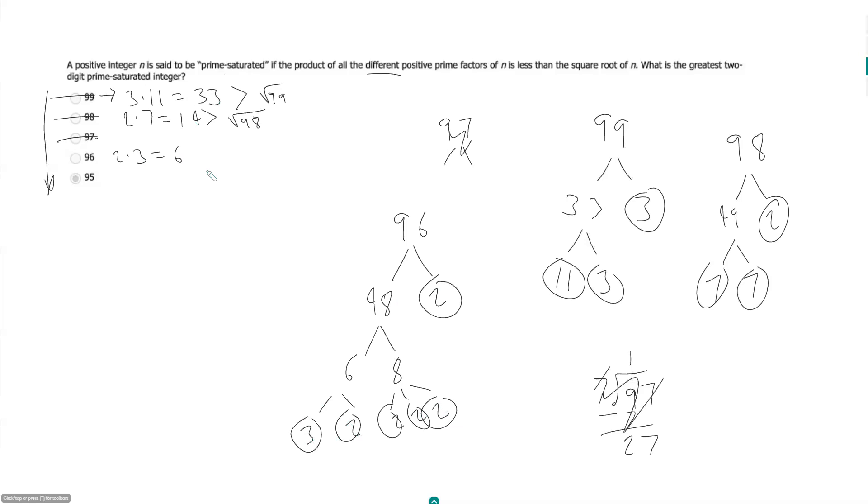And the square root of 96, again, it's going to be pretty close to 10. So here the square root of 96 will be greater than 6. And D looks to be our answer.